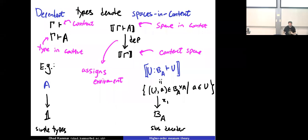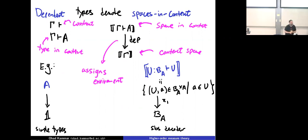When you work out what that means, the elements of that subspace are pairs: the subset U together with an element of that subset. The environment morphism recovers the subset we're talking about. The random elements of this space will appear in the exercises. The key point is that the context knows what U is.